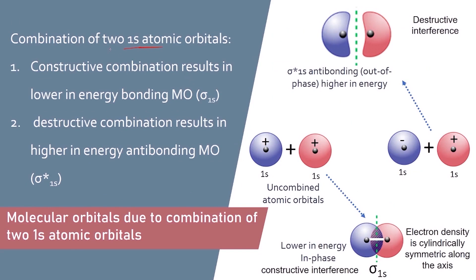The first case is combination by addition — in-phase addition — which results in the formation of the sigma 1s bonding molecular orbitals. Notice that the energy of electrons in sigma 1s is lower than electrons' energy in their atomic orbitals. That is why atomic orbitals prefer to combine, to be lower in energy. Also, you can see that the combined orbital's electron densities lie between the two nuclei, forming a cylindrically symmetrical region along the axis.